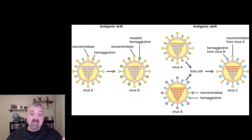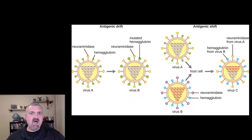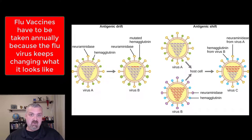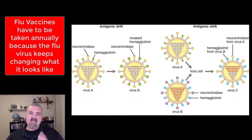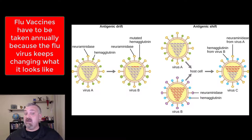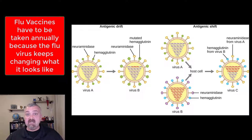These slow and steady changes — antigenic drift — and these rapid changes — antigenic shift — are constantly changing what the outside of the flu virus looks like. This is why the flu vaccine has to be taken annually. They have to try to guess what three, four, or five strains of flu we're most likely to see next flu season, and they produce vaccines against those. But since it changes every year, you don't have a flu vaccine that can be taken once and forgotten about.